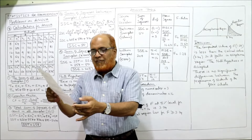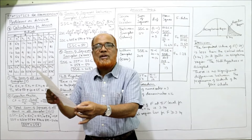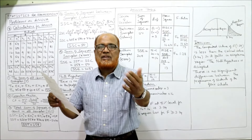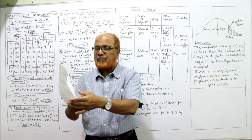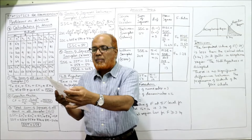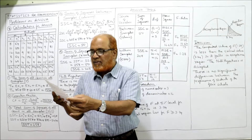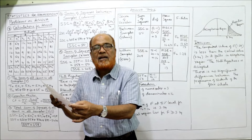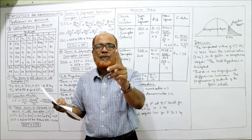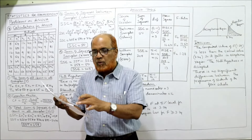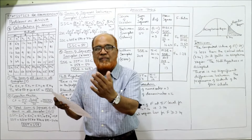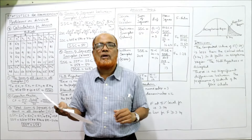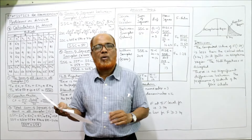Start with the first theory video to understand what is there, then the first two problems video where I explained how to solve the ANOVA problem, then come to this video. Problems one through four are done. The fifth problem is two-way ANOVA. After this video I'm going to do the fifth and sixth problems, which are two-way ANOVA, and the seventh is also two-way, while the eighth is one-way.